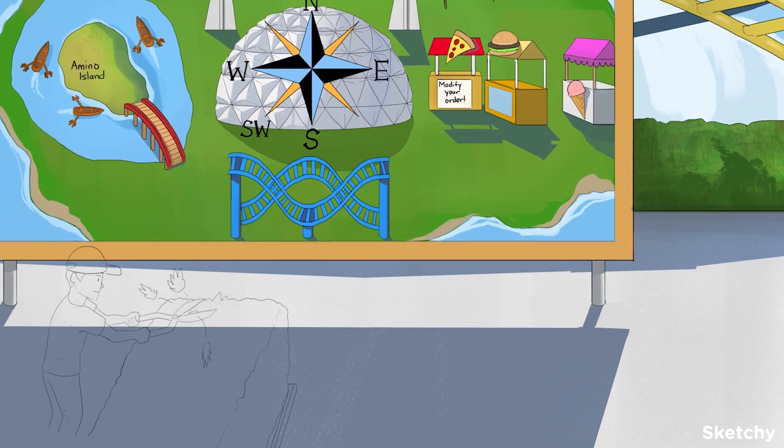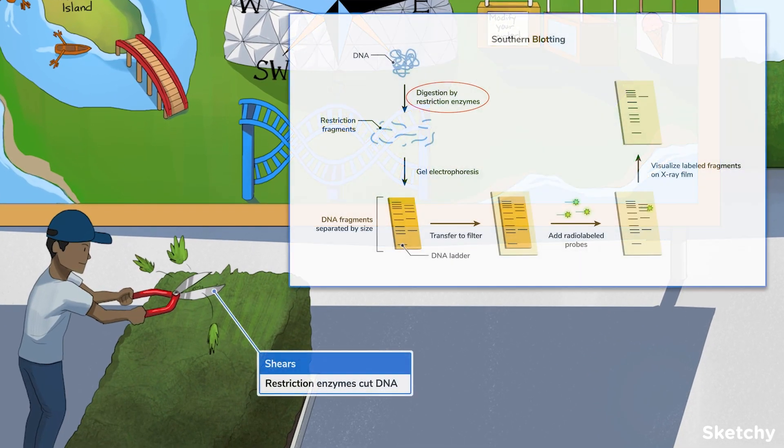First, restriction enzymes cut DNA into smaller pieces. This is depicted by a maintenance worker using shears to prune the shrub.